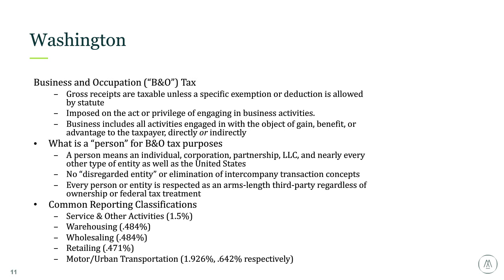B&O tax is based on the specific activities a business engages in, and there are 36 different B&O tax classifications that can potentially apply. The B&O tax classification drives the tax rate you pay and how your income is sourced or apportioned to the state, so it's important to get that right. Common classifications include service and other activities — attorneys, CPAs, architects, engineers, professional service firms — as well as manufacturing, wholesaling, and retailing, each with their own rates and sourcing rules.